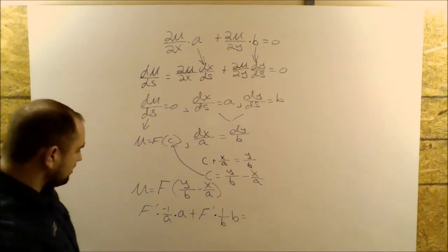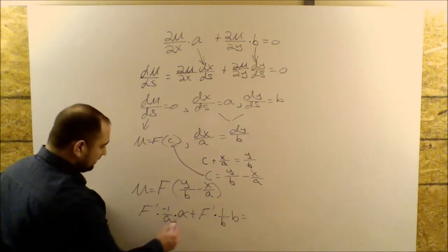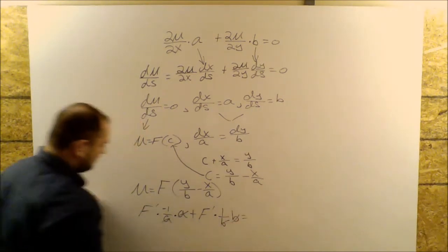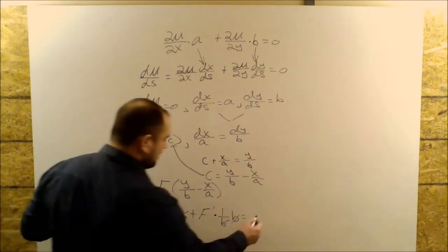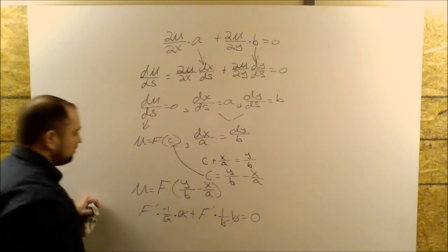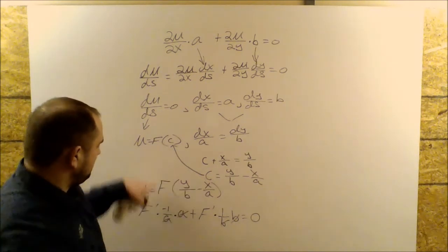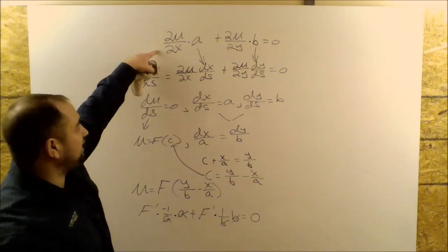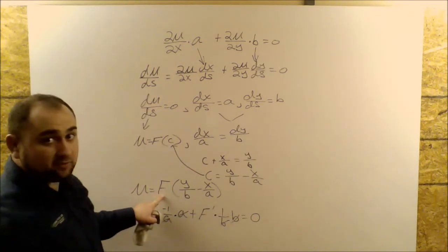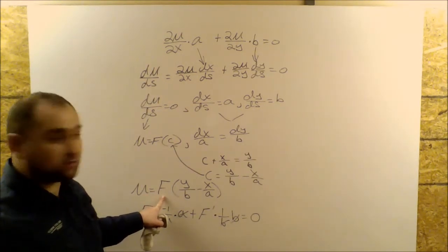So hopefully this equals zero. Now if I cancel out the A's and I cancel out the B's, I get minus F prime plus F prime, which indeed equals zero. So this represents my family of solutions to this PDE when F is any function that is continuous and differentiable.